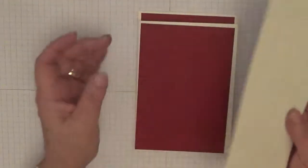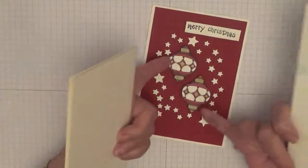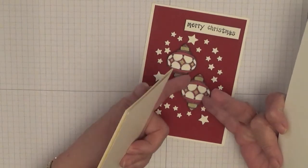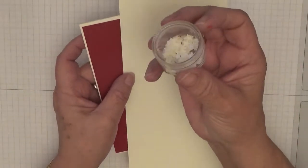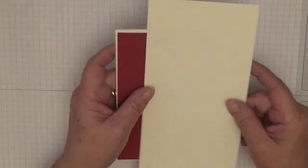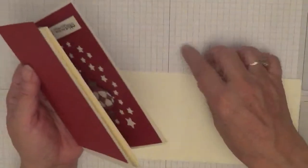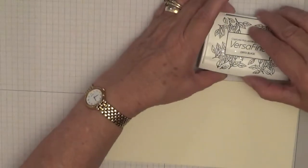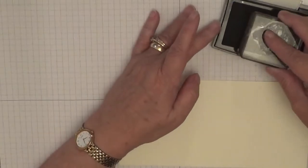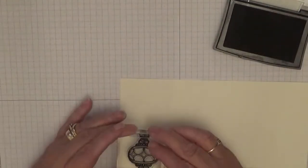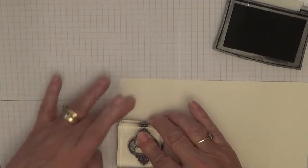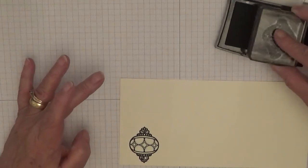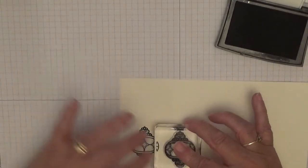I've also got a scrap of thin Very Vanilla to stamp the sentiment and the baubles on. I don't need to punch the stars, well at least I don't think so. I've got a pile here I punched out when I made this card. Never used them all. To get started we need our VersaMark and our bauble.